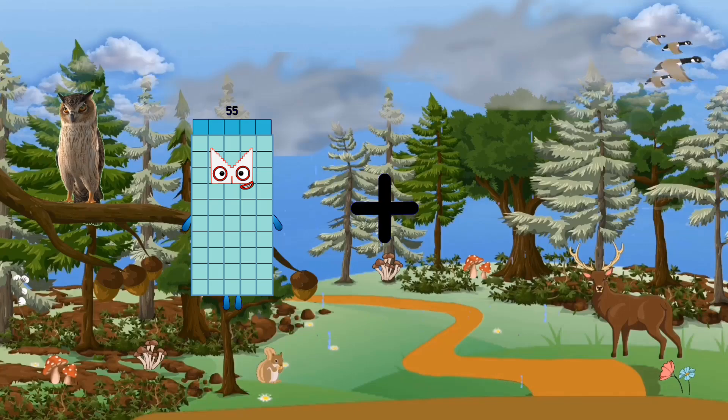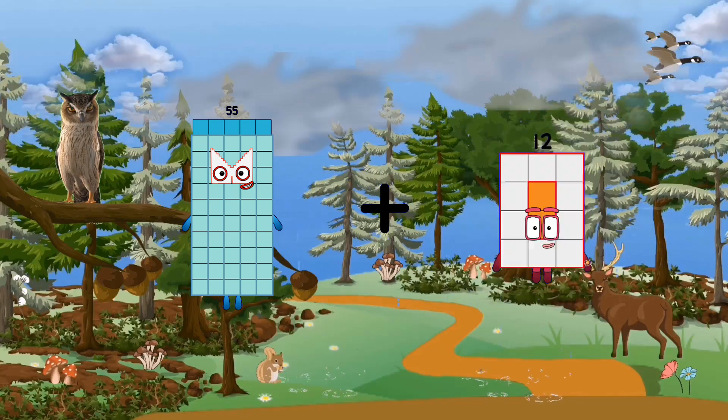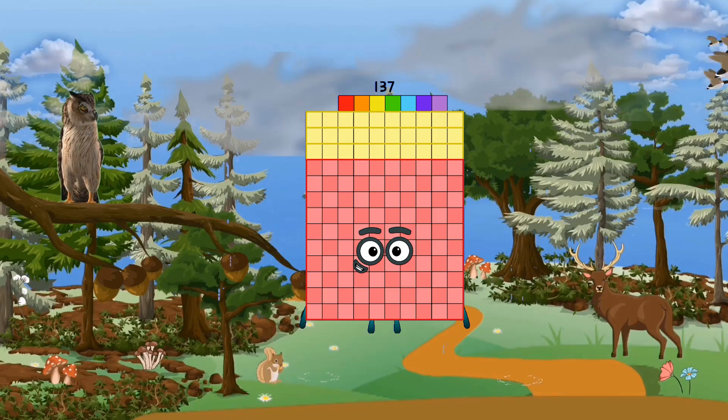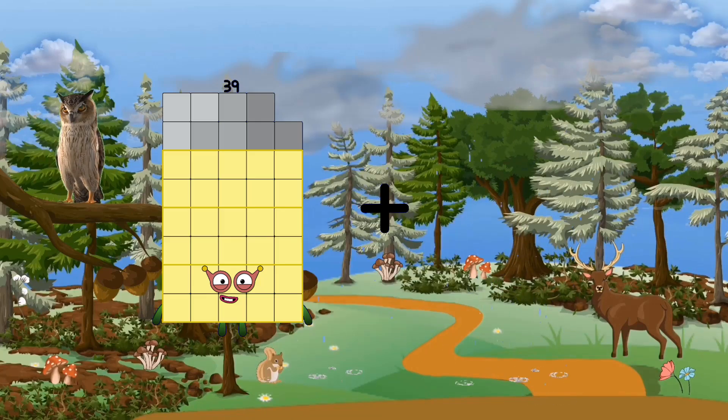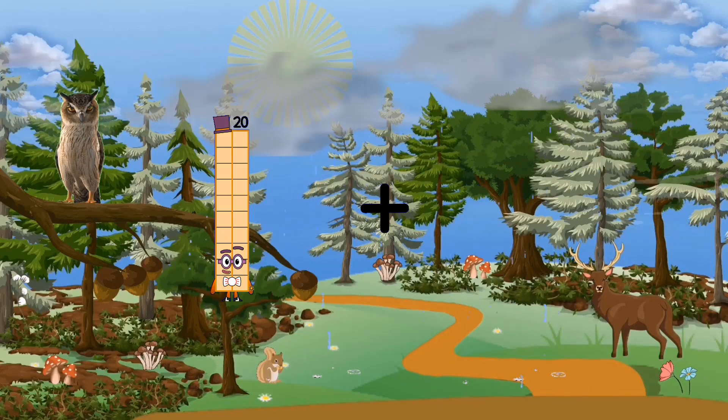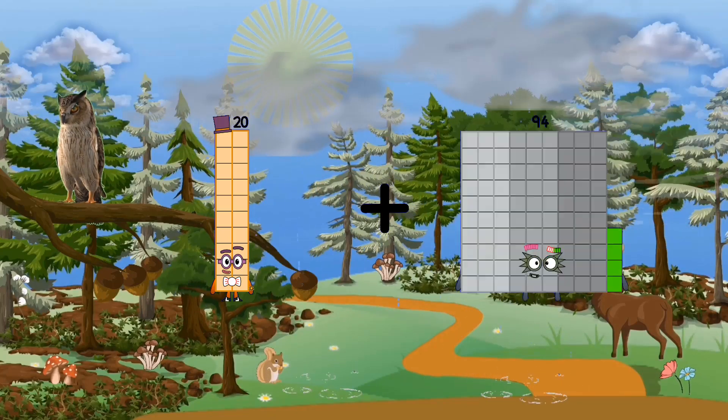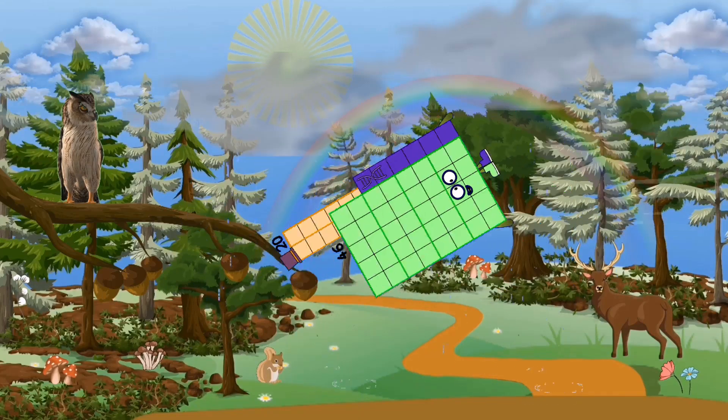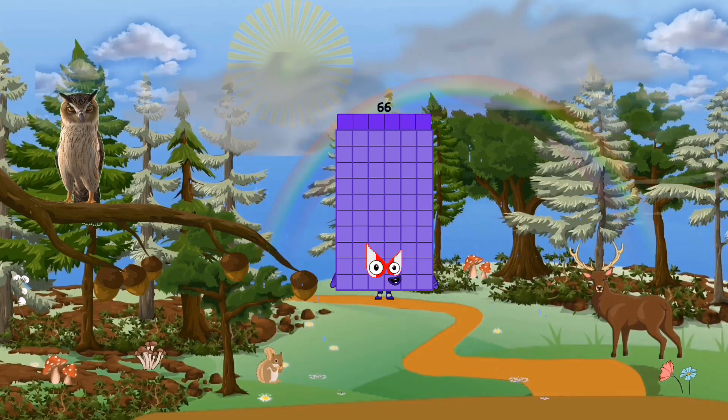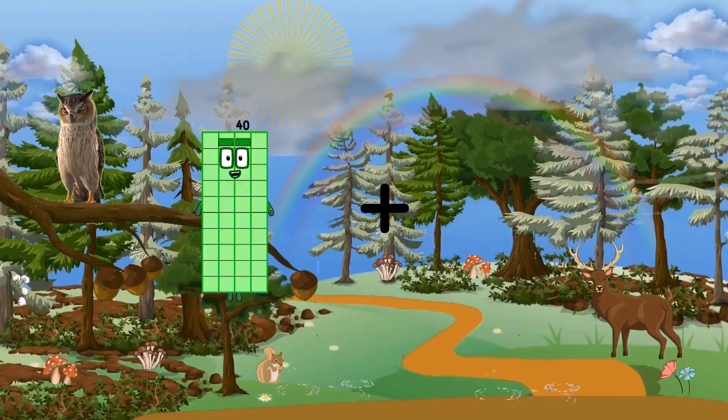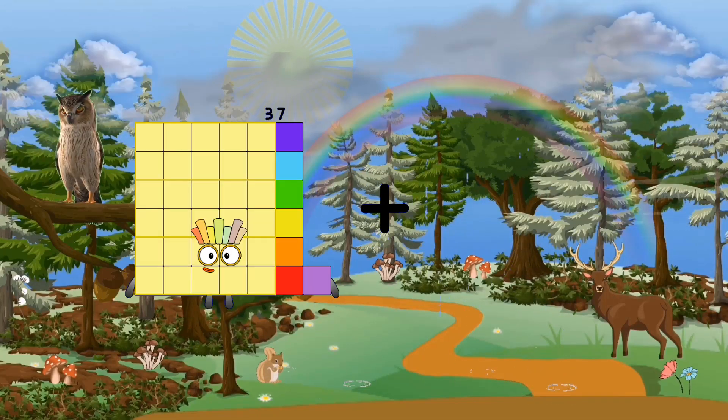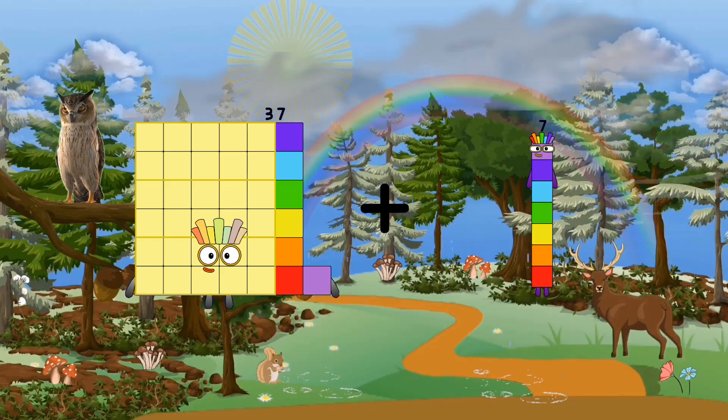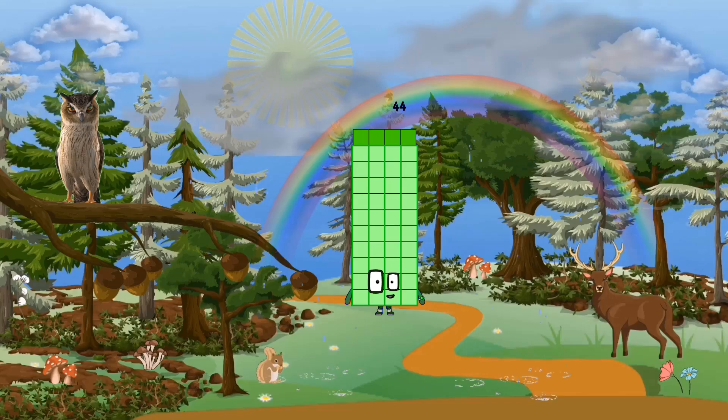55 plus 82 equals 137. 20 plus 46 equals 66. 37 plus 7 equals 44.